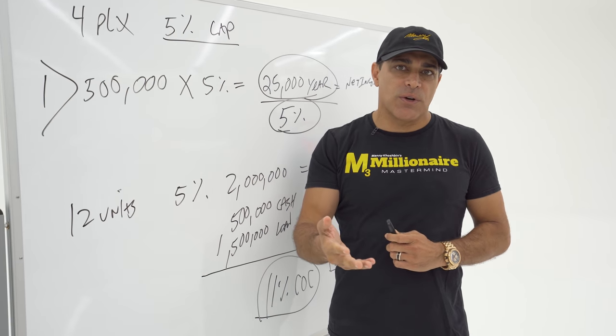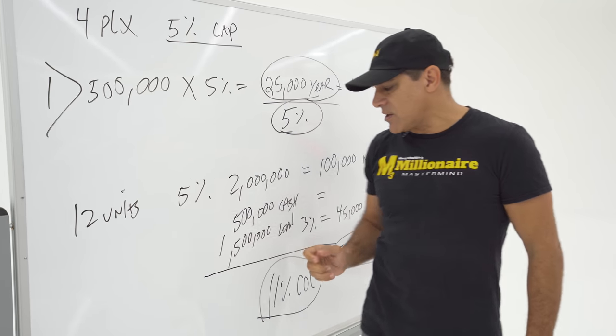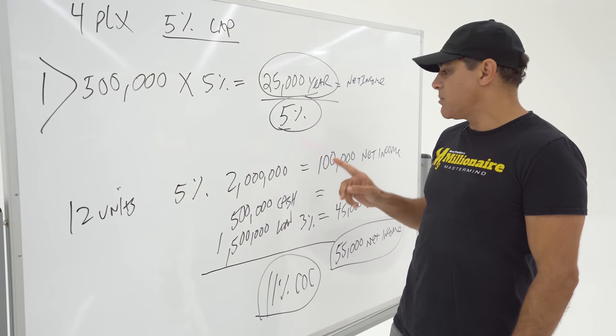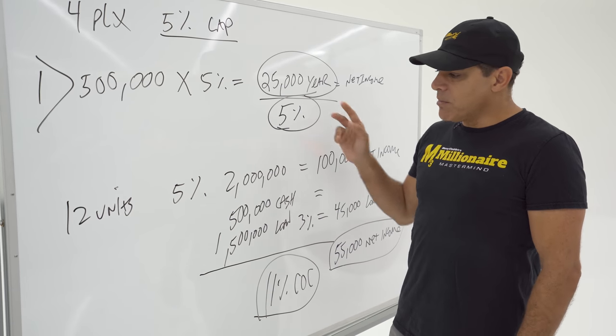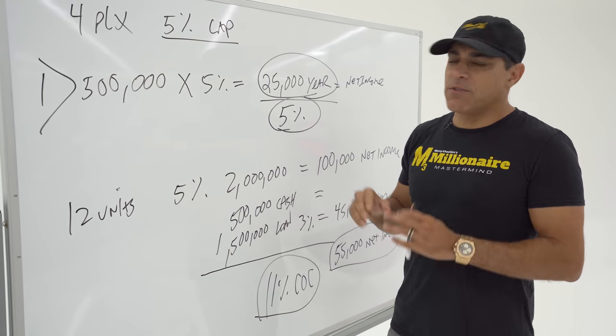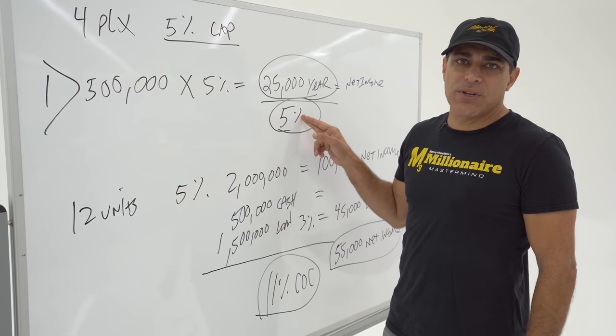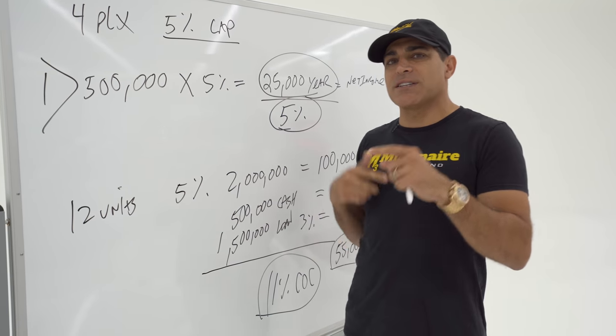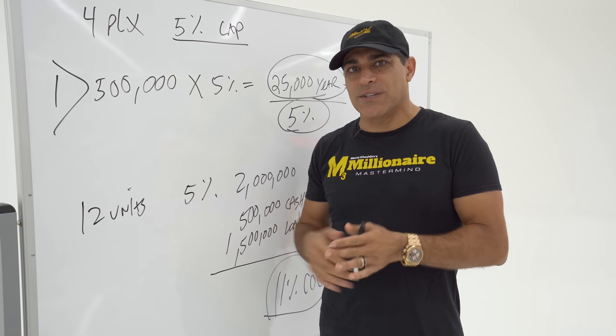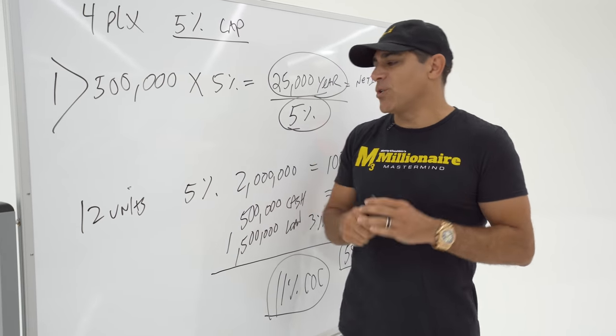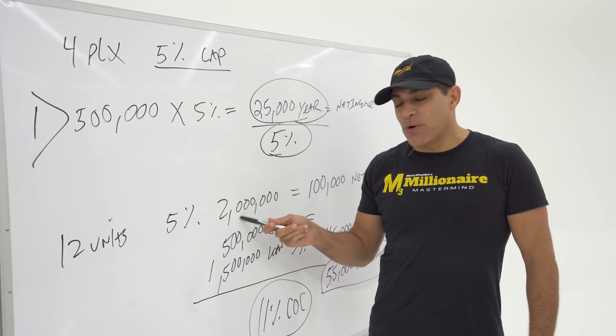It gives you extra cash flow as long as your cost of money is less than the property cap rate. So make sure it's not reversed. If the property is throwing off 3% return and you're borrowing at 5%, it's the exact reverse effect. You'll be paying the bank for buying that real estate. So that's a major no-no. And now how do you sell this for more?